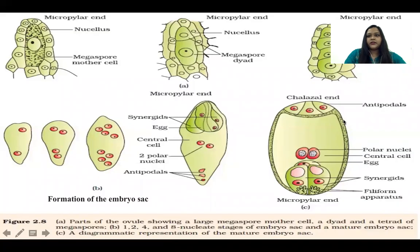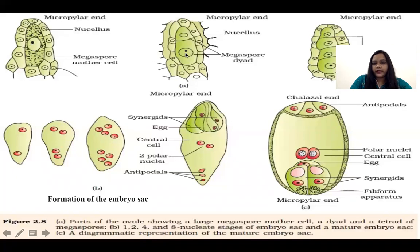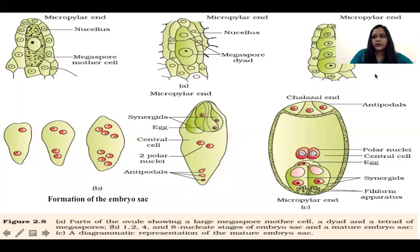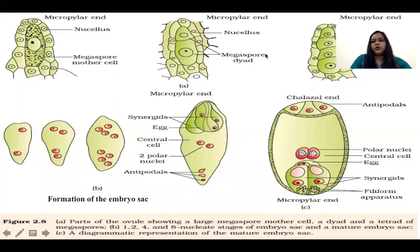Here we can see this process. There is one megaspore mother cell. Division is happening at the micropylar end, giving a megaspore dyad condition — from 1, 2 cells are produced. After that, meiotic division produces 4 cells — called megaspore tetrads.